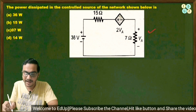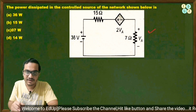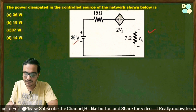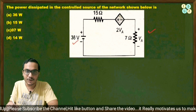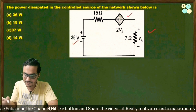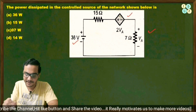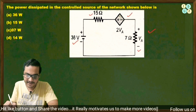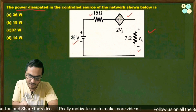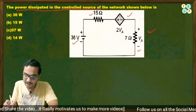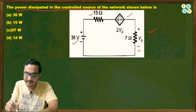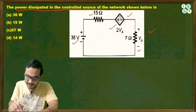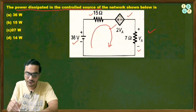In this question, we have been given a network where there are two sources: one independent voltage source of 36 volts, and one voltage-controlled voltage source (VCVS). There are also two resistances of 15 ohm and 7 ohm. We need to find the power dissipated in the controlled source, that is the 2Va dependent source. Let's apply KVL in this closed loop.